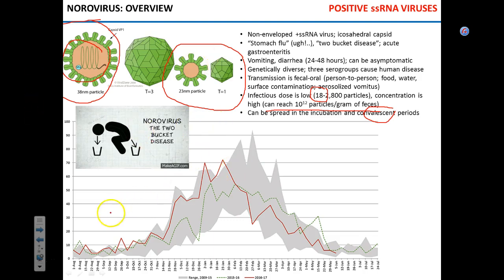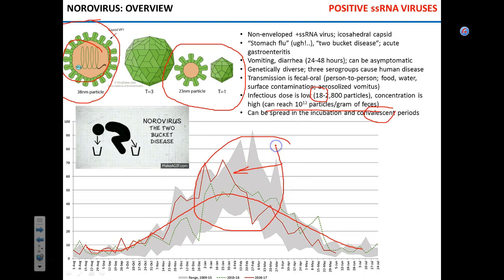This graph shows the number of norovirus cases — the green line represents 2015-16 and the red one 2016-17. The peak number of cases happens around January and February. We still have no clear idea why — maybe because we're all inside and spread is easier.